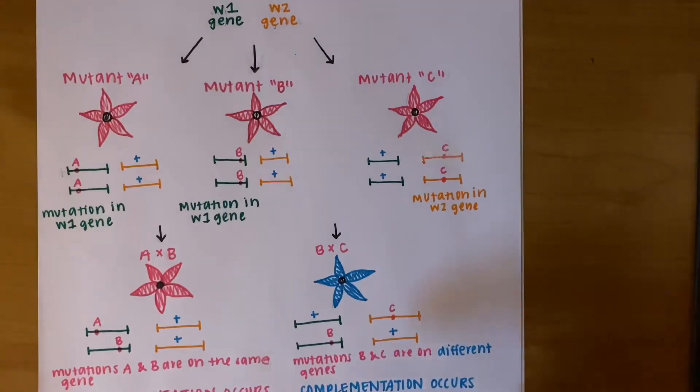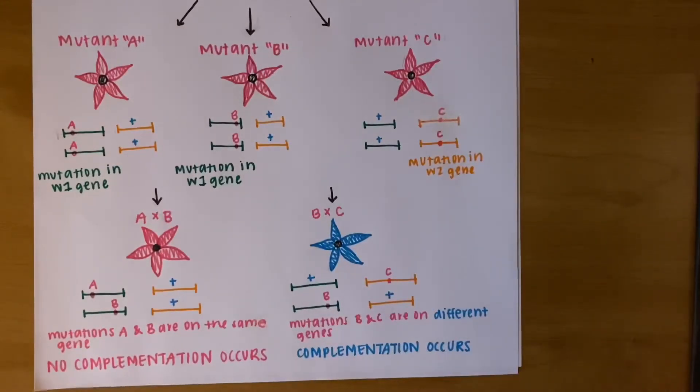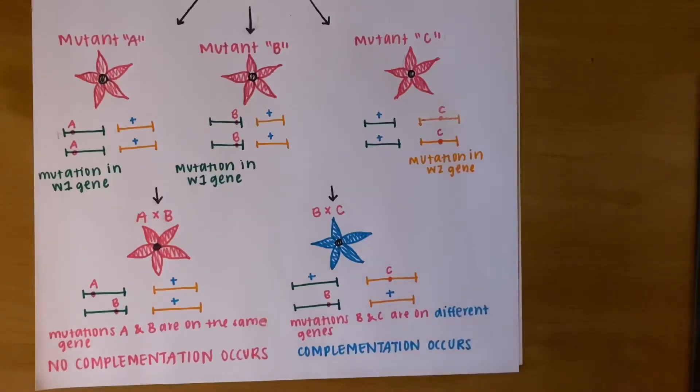Here, we would say that complementation has occurred because the mutations are on different genes. Now that we've gone through two crosses, I would like for you to try A cross C on your own. Pause the video here, and when you've attempted to cross, press play.